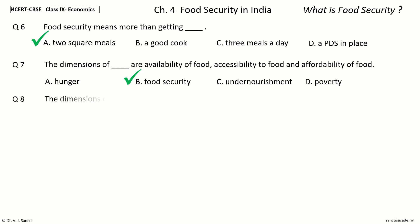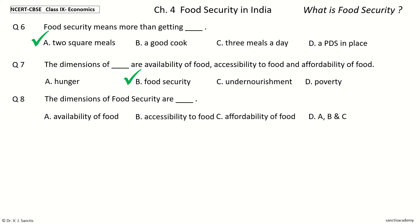Question 8: The dimensions of food security are dash. The options are: A) availability of food, B) accessibility to food, C) affordability of food, D) A, B and C. Your time to choose. And the answer is A, B and C. So the dimensions of food security are availability of food, accessibility to food, and affordability of food.